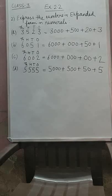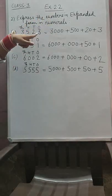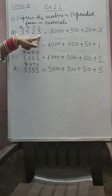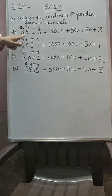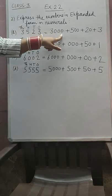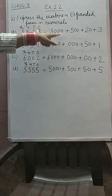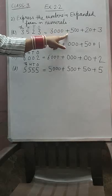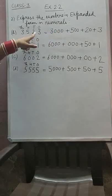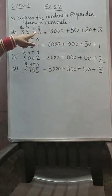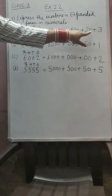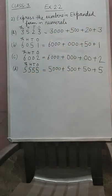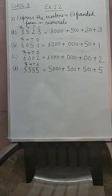So in our next class, we will proceed with sum 3 and 4. Just remember: firstly we have to fix its place — 1, tens, 100, 1000. Then we write 3 thousands, which is 3 multiplied by 1000, that is 3 followed by 3 zeros, plus 500, plus 20, plus 3 as it is. So we will do the next question in the next class.